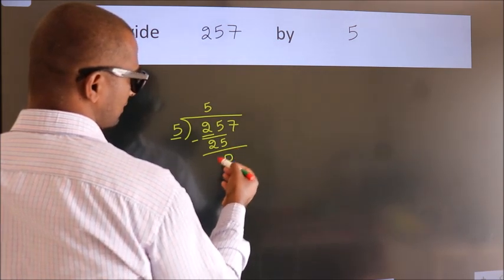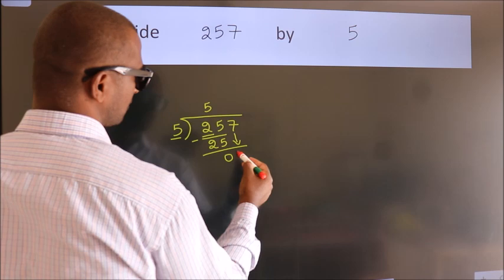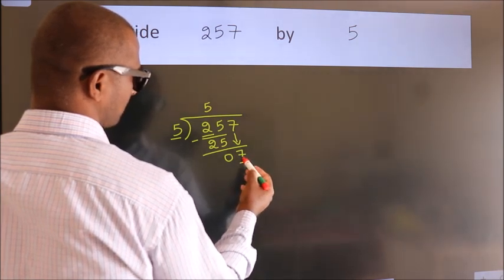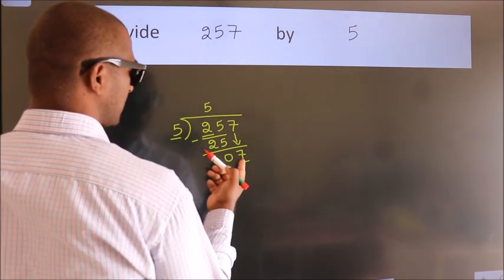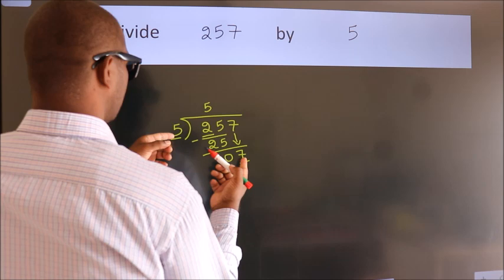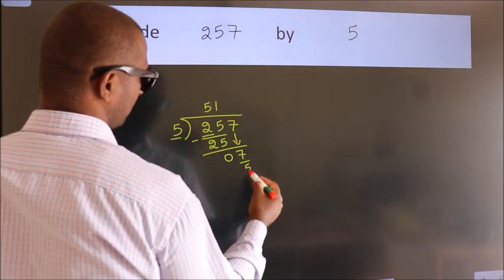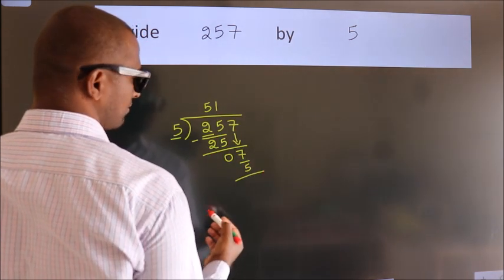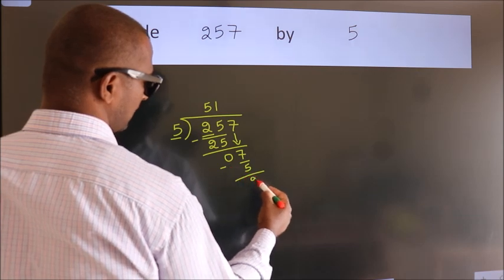After this, bring down the beside number. So, 7 down. So, 7. A number close to 7 in 5 table is 5 once 5. Now, we subtract. We get 2.